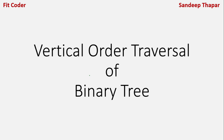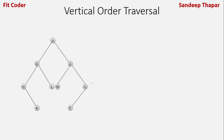In this video, we will discuss the vertical order traversal of a binary tree. In vertical order traversal, we have to print the tree vertically. It is a list of top-to-bottom orderings of each column, starting from the leftmost column and ending on the rightmost column.